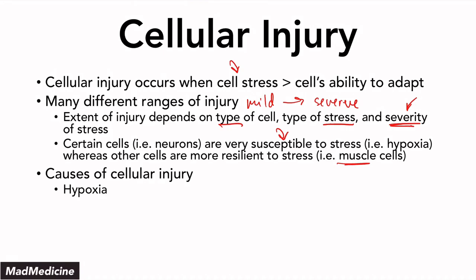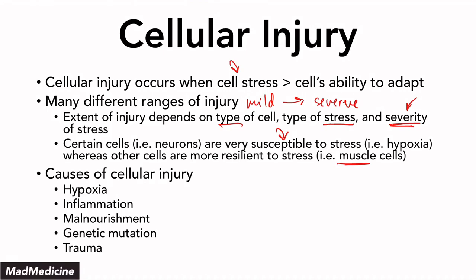You should know that there are other causes of cellular injury like inflammation, malnourishment, genetic mutations, as well as the obvious, which is trauma. We're going to start talking about hypoxia briefly and then discuss the causes of hypoxia. In the next video on hypoxia, we're going to finish up discussing the very high yield facts of hypoxia that you need a good understanding of.